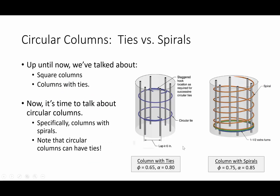Let's make sure we're clear on notation. Up until now we've talked about tied columns, but I want to make sure there's a clear difference between a circular column with ties and a circular column with spirals. From a behavior standpoint, it's the spirals that affect how the column behaves once it fails. On the left I have a series of ties spaced at 12, 16, or 20 inches — they have a significant distance between them.